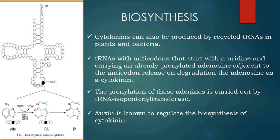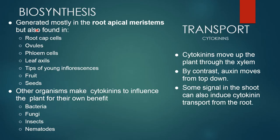Auxin is known to regulate biosynthesis of cytokinins. The biosynthesis is generated mostly in the root apical meristem but also found in root capsules, ovules, phloem cells, leaf axils, tip of young inflorescence, fruit, and seeds. Other organisms make cytokinins to influence the plant for their own benefit, like bacteria, fungi, insects, and nematodes.